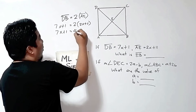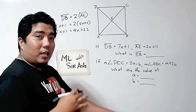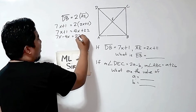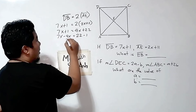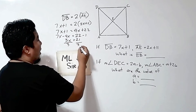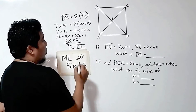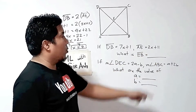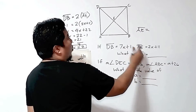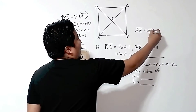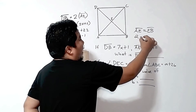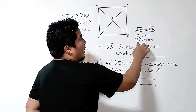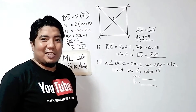By doing some algebra, we have 7X plus 1 equals 4X plus 22. Transposing terms to combine like terms: 7X minus 4X, and 22 minus 1, giving us 3X equals 21. Dividing both sides by 3, X equals 7. Since AE equals EB (both are half of the diagonal), we can substitute X equals 7 into 2X plus 11: 2 times 7 plus 11 equals 14 plus 11, and that is 25 units.